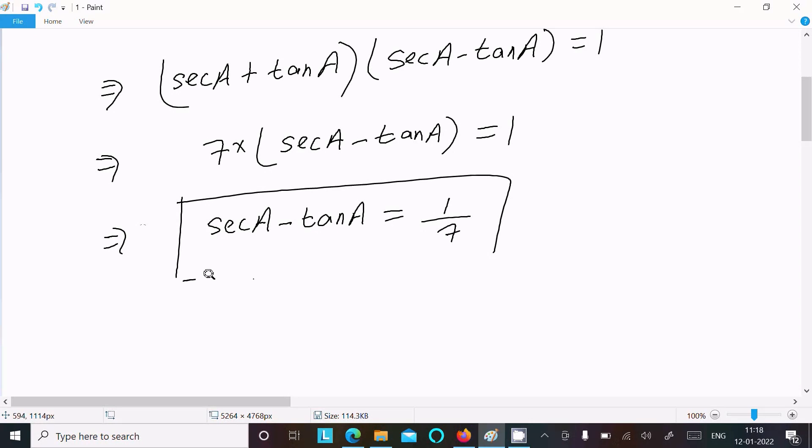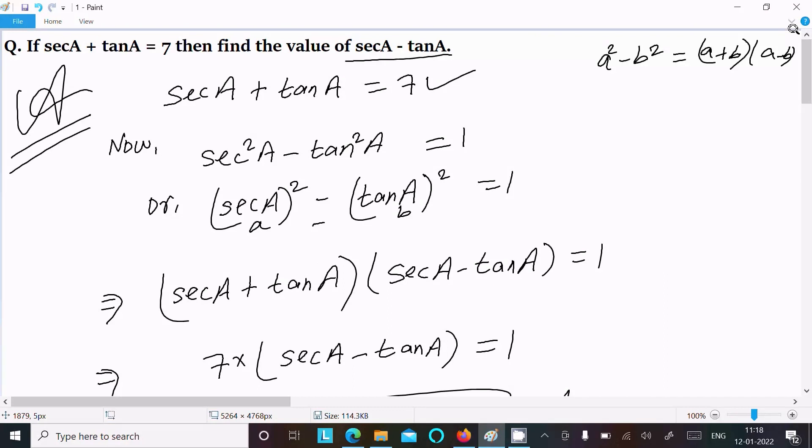So this is the answer. One time going to repeat: write the given, use this formula and break into a square minus b square form.